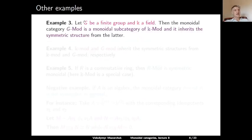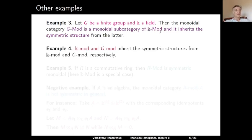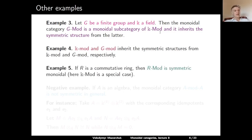Here are some other examples. If G is a finite group and K a field, the monoidal category of all G-modules is a monoidal subcategory of all K-modules, and so it inherits a symmetric structure. We can restrict to finite dimensional vector spaces over K, and respectively to finite dimensional G-modules — these are again symmetric monoidal categories. If R is a commutative ring, the category of all R-modules is symmetric monoidal, and the category of all vector spaces over a field is a special case.